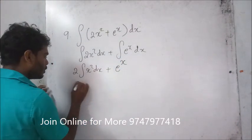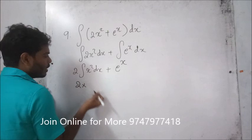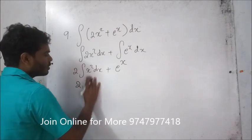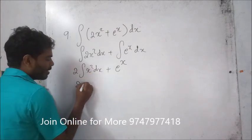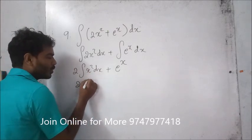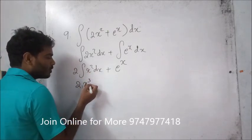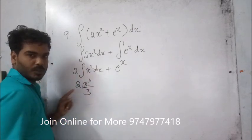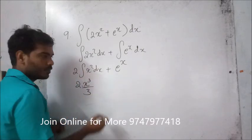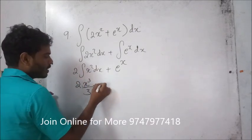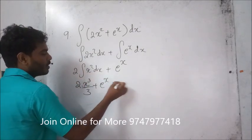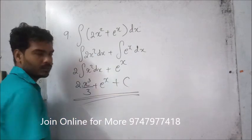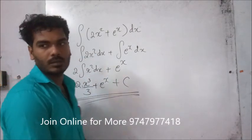Then 2 into x squared integral — we move on to x cubed by 3, that is 2 plus 1 — plus e raised to x, plus log.